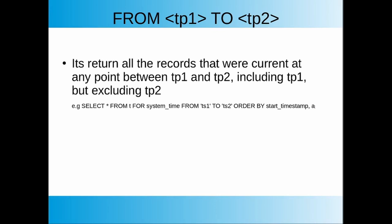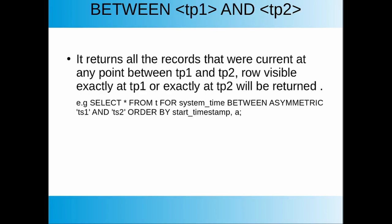The other form is the FROM clause, which returns all records current within a specified time range, including time point one but excluding time point two. The BETWEEN clause is the same as the FROM clause except it includes records current at time point two as well — so the only difference from the FROM clause is that BETWEEN includes time point two in its return value.